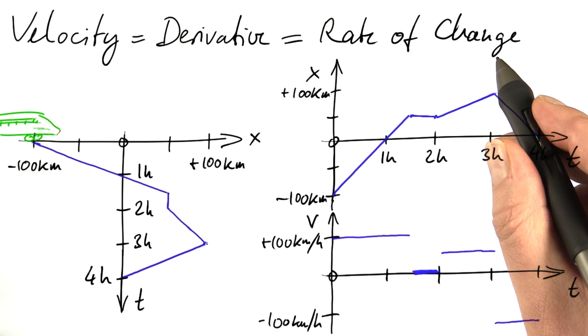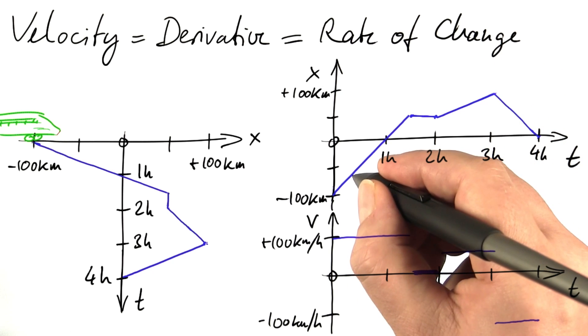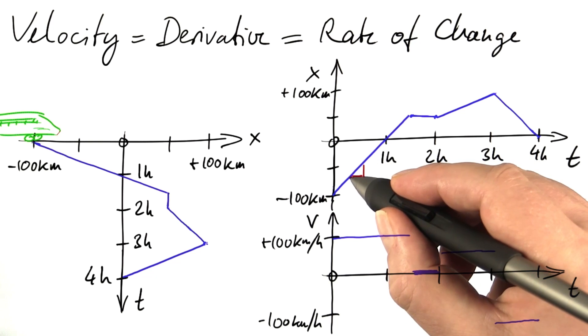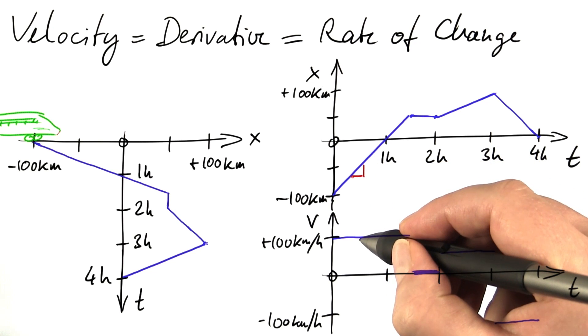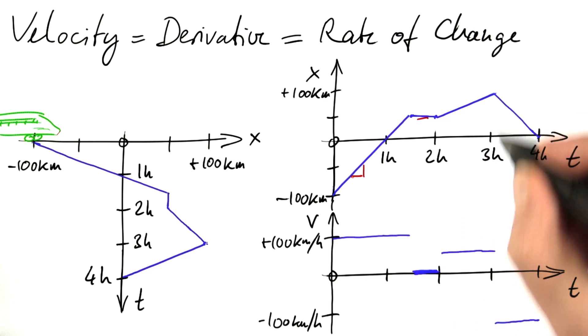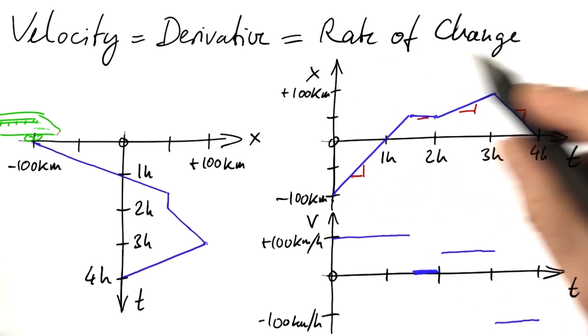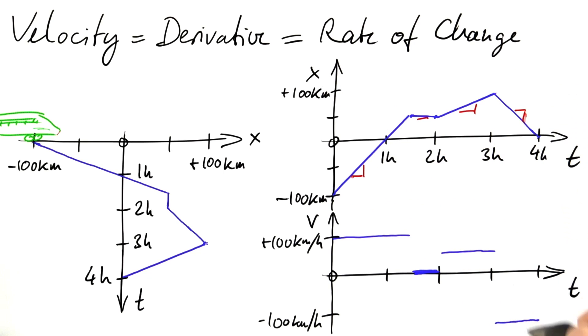And this is the very same as the derivative. The derivative tells us the local rate of change. Here the derivative is 100 kilometers per hour. Here it's zero. Here it's 50 kilometers per hour. And here it's negative. As the time advances, the x position decreases. A negative derivative. Negative velocity. Negative rate of change.